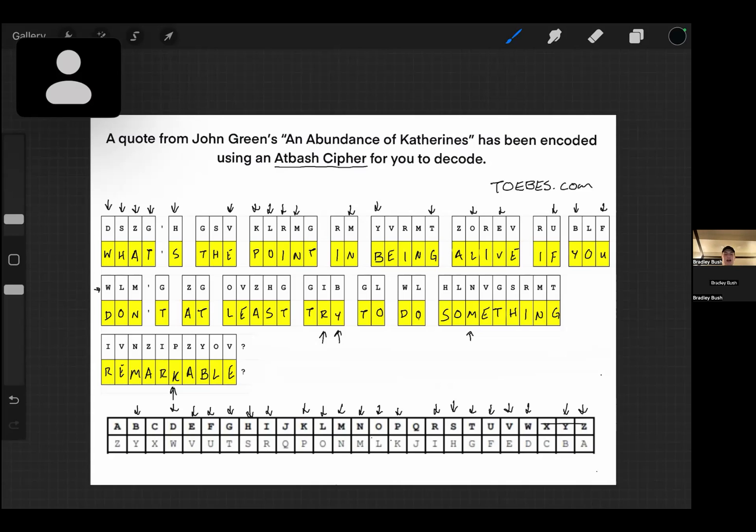This one says "What's the point in being alive if you don't at least try to do something remarkable." So this one is a pretty straightforward kind of code. It's one of the easier ones that you will do. It's worth probably anywhere from 60 to 100 points.